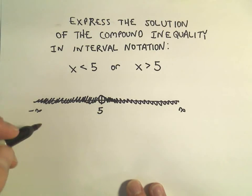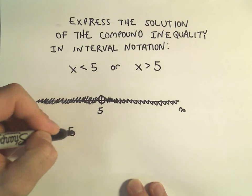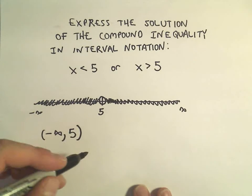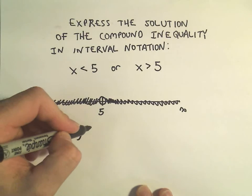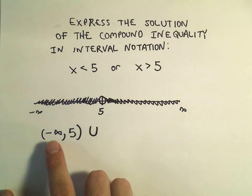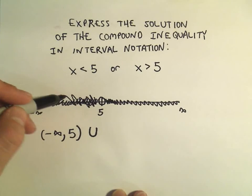it says we'll go from negative infinity up to, but not including, 5. We can use this interval. Sometimes people will write the word 'or,' sometimes you'll see people write this union symbol. So we can go from negative infinity to 5. That takes care of everything on the left.